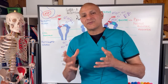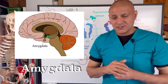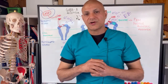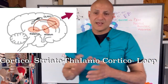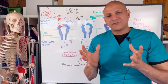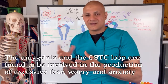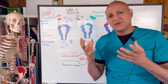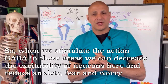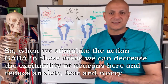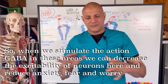When we're talking about fear, anxiety and worry, there are two areas that we're really focusing on. One is the amygdala, and the other is the corticostriatal thalamocortical loop, which is found in the prefrontal cortex. Both these areas have been found to be involved in the production of excessive fear, worry and anxiety. So when we stimulate the actions of GABA, which is an inhibitory neuron, we decrease the excitability of neurons in these areas, thereby creating that calming effect.